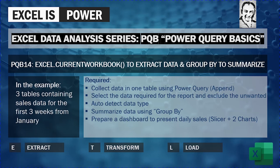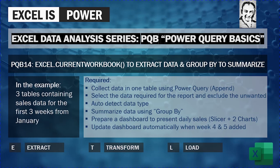Then we are going to prepare a dashboard to present our daily sales. We will use a slicer and two charts — a very simple interactive dashboard using the slicer, presenting data in two charts: one for quantity and one for net sales. Finally, we are going to update the dashboard automatically when we receive data for week four and week five — just one refresh and the data will be updated automatically.